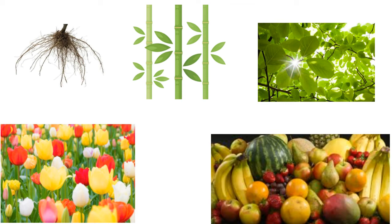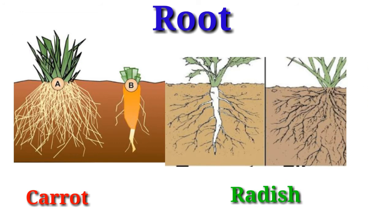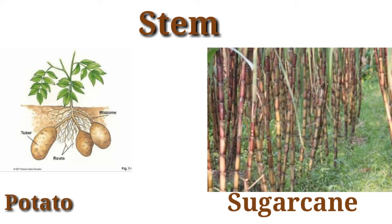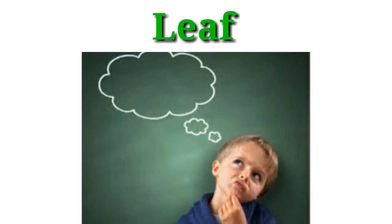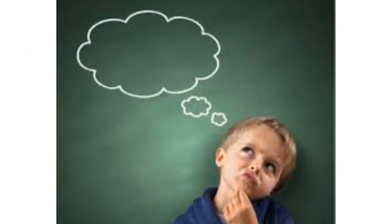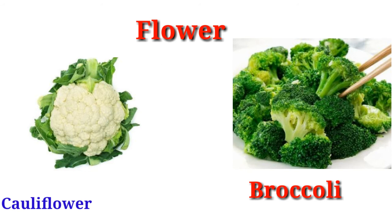Kids, do you know that we eat different parts of plants as different vegetables? There are some plants whose root is used as a vegetable, like carrot and radish, and we eat them as vegetables. Also, we eat some plants' flowers — for example, cauliflower and broccoli are eaten as flowers.